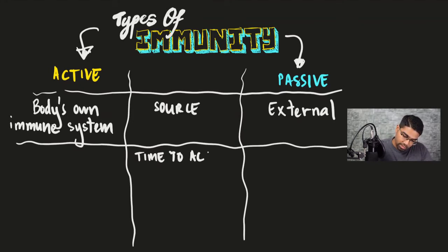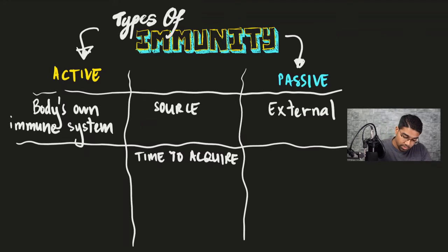The next point of difference is the time to acquire immunity — that is, how long it takes before the antibodies are ready to fight against the pathogen or foreign substance. For active immunity, our body's own immune system is going to produce the antibodies, so it makes sense that it will take some time for the body to recognize the antigen and to produce antibodies against it.